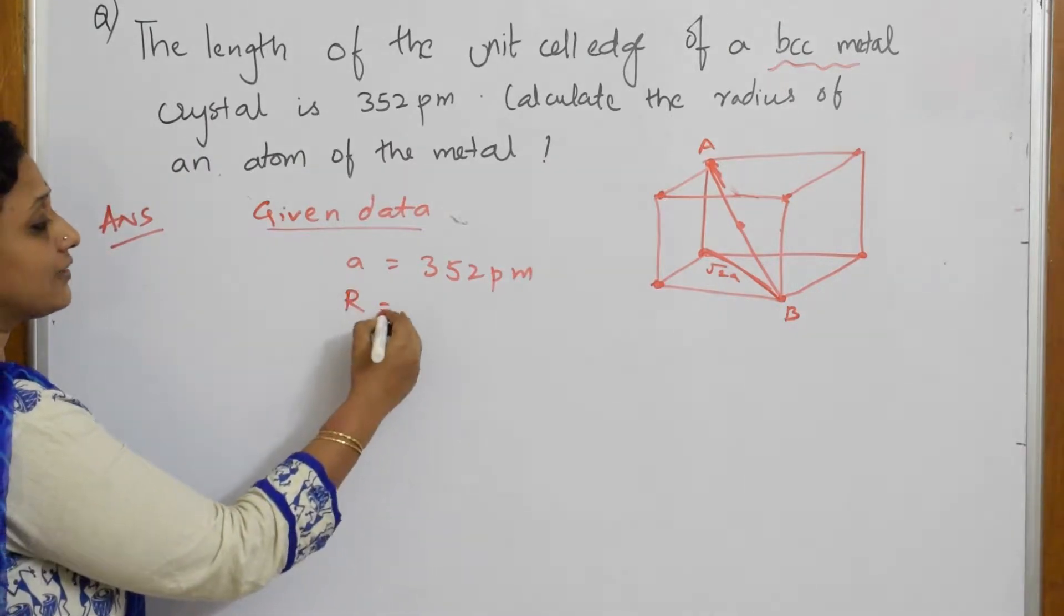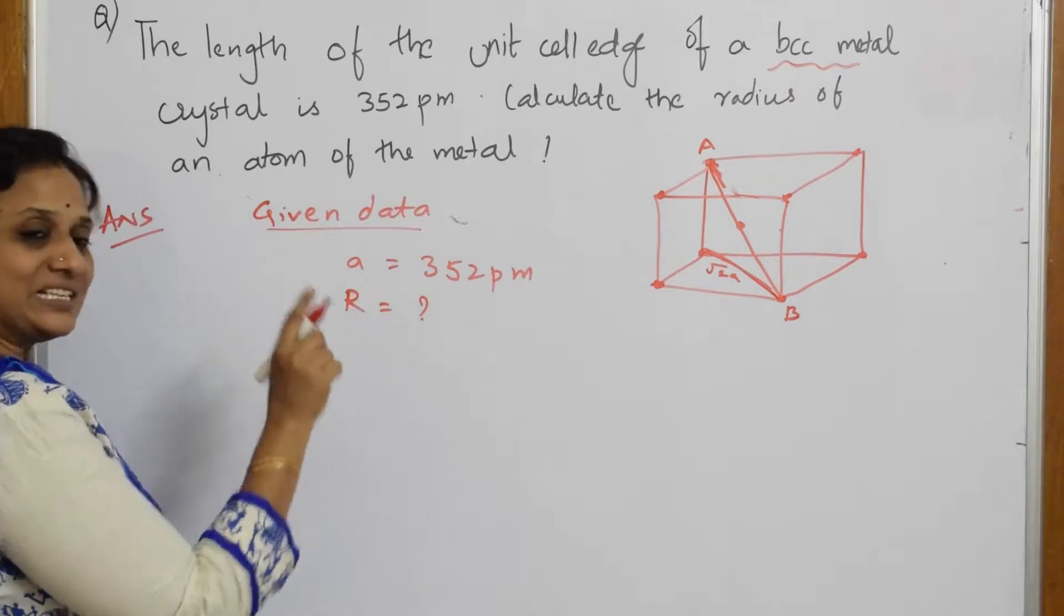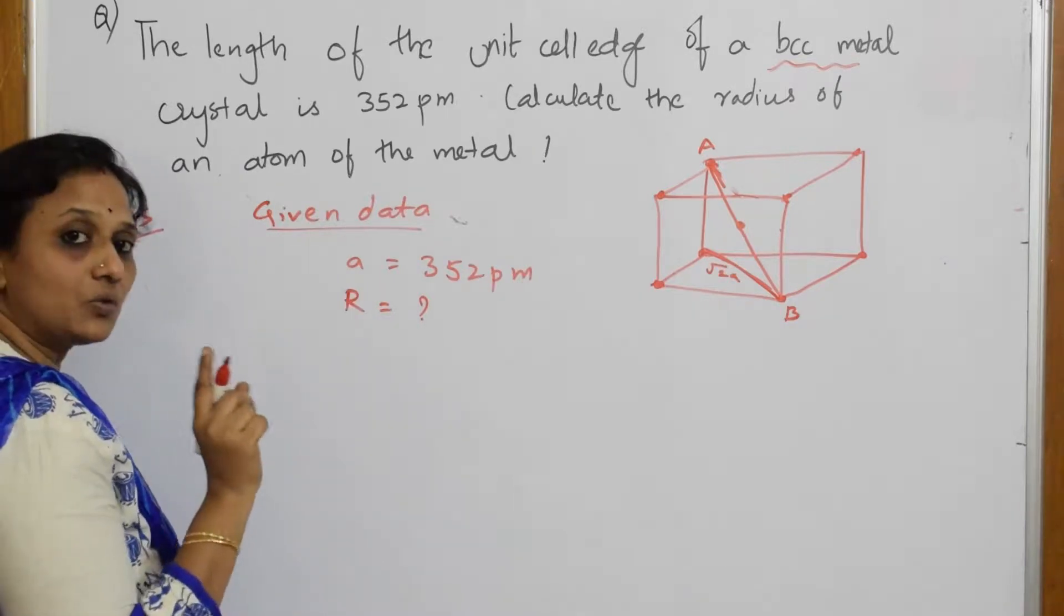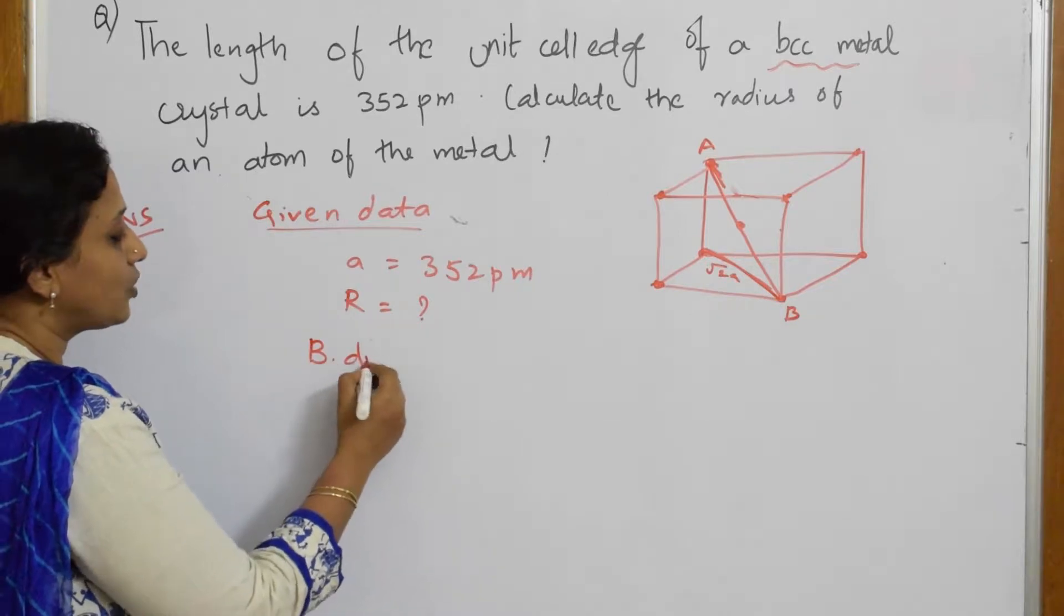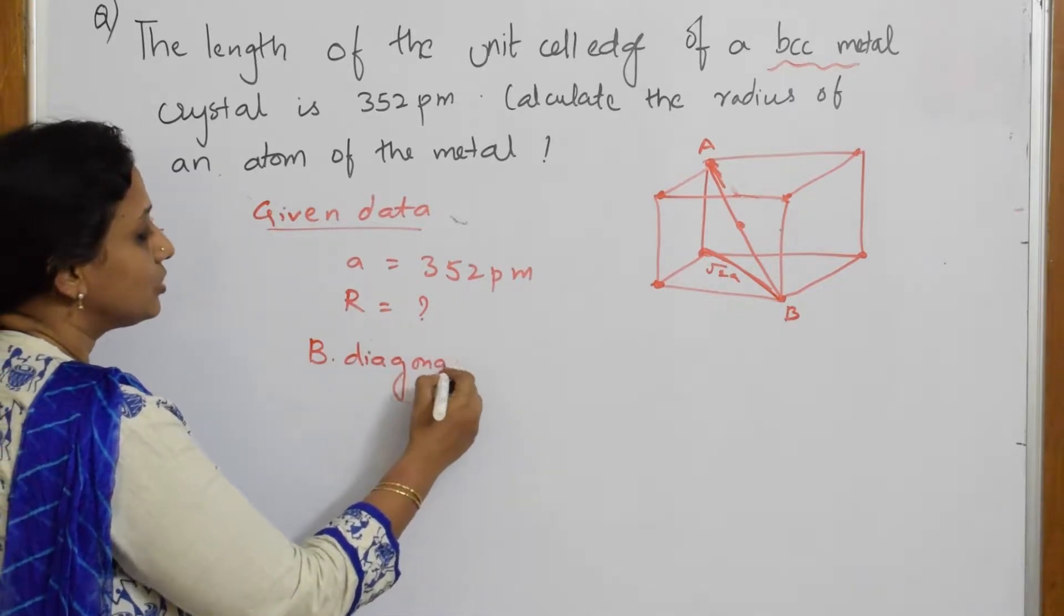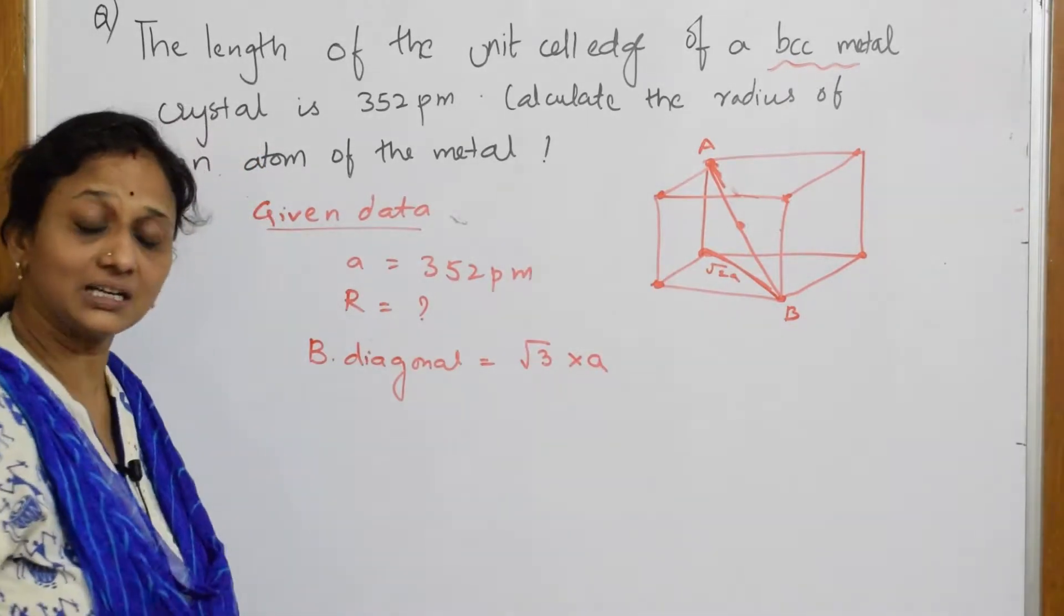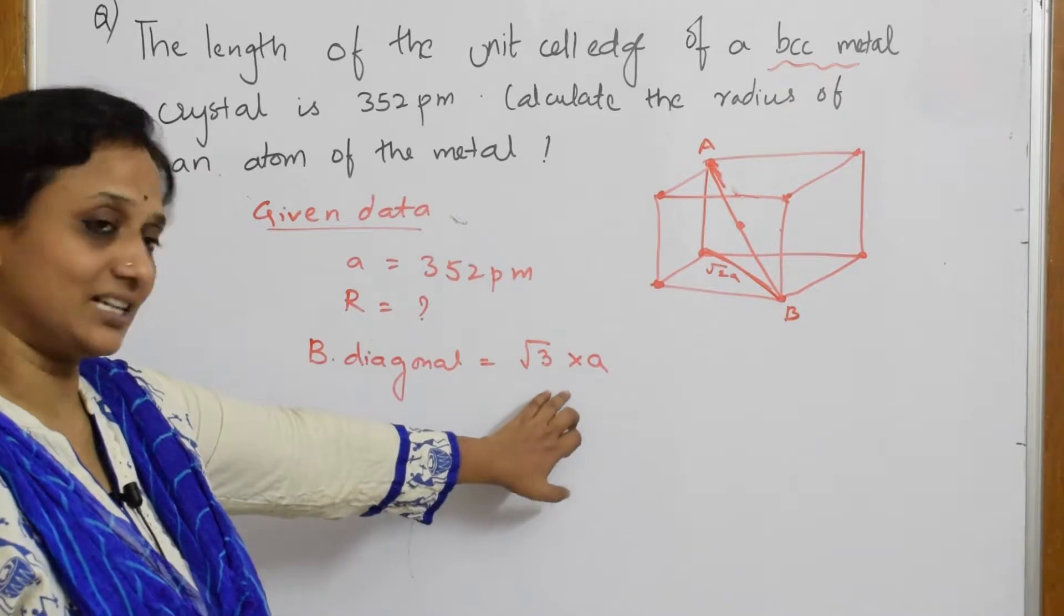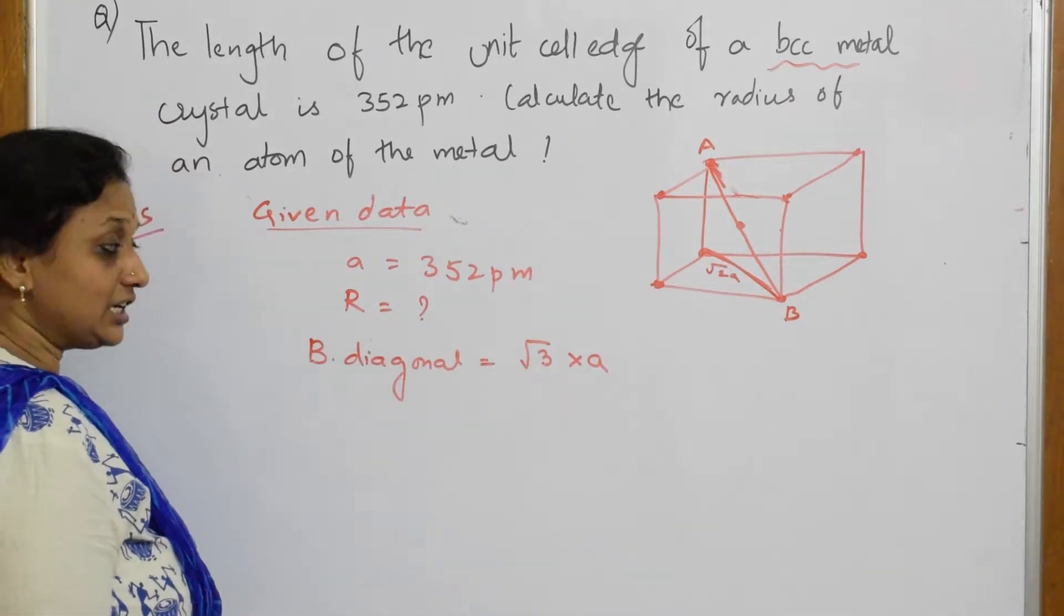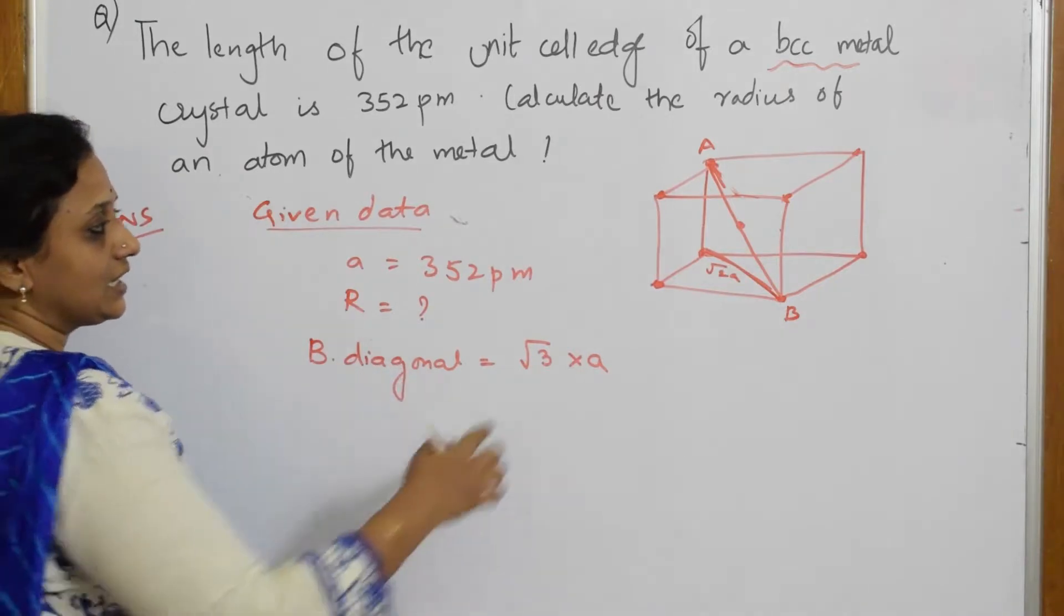According to the BCC lattice, we know one formula - body diagonal is equal to √3 times edge length. Please recollect, go through the packing efficiency of BCC. Body diagonal = √3 × a.